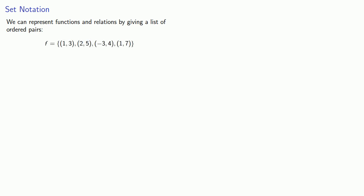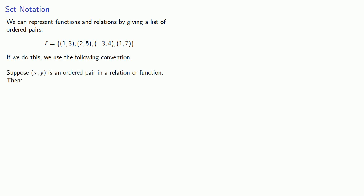We could represent a function or relation in terms of an equation, but sometimes that's not always possible. There are two other ways to represent functions and relations. One is through set notation — we can represent functions and relations by giving a list of ordered pairs. The convention is that if (x, y) is one of the ordered pairs, then x is the input value and y is the output value.